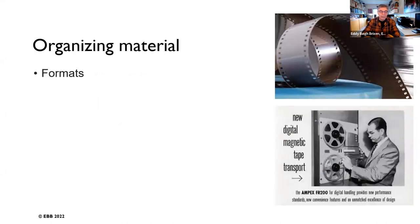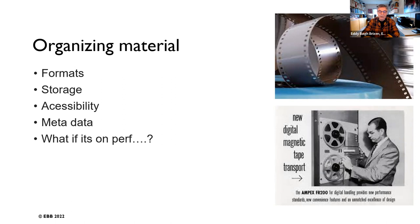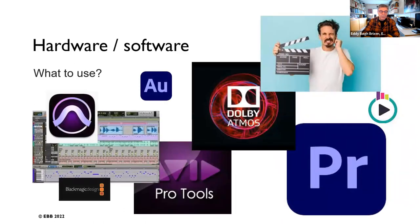Organizing the material involves thinking about formats, storage, accessibility, and metadata. Some media may still exist on perforated tape or magnetic tape, and when working with it you have to consider your hardware and software. There are different philosophies — some rely heavily on Pro Tools, others use different audio software. When it comes to hardware, there are also different solutions, and opinions differ between television and film workflows.